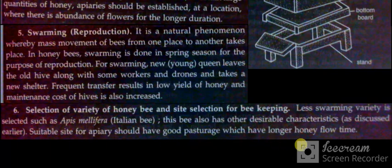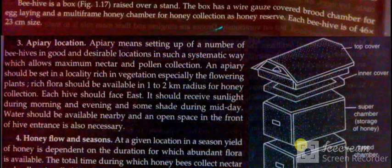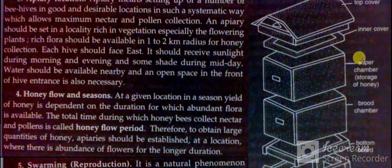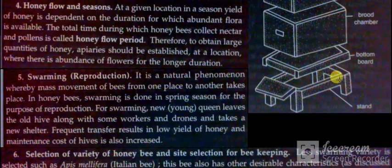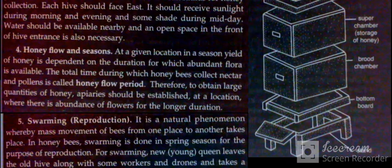A suitable site for an apiary should have good pasture which has a longer honey flow time. The parts of a beehive include: top board, inner cover, super chamber, storage of honey, brood chamber, bottom board, and stand.